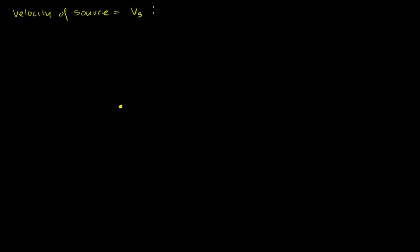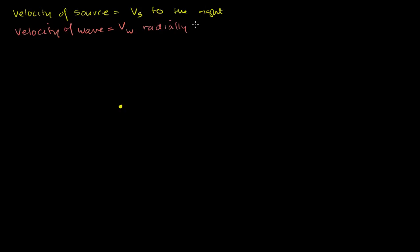There's a source of a wave moving to the right at some velocity — let's call it v sub s to the right. We're going to do what we did in the last video but in more abstract terms to come up with a generalized formula for the observed frequency. The source is emitting a wave, and let's say the velocity of that wave is v sub w, radially outward — that's the velocity of the wave.